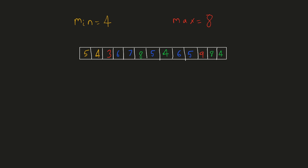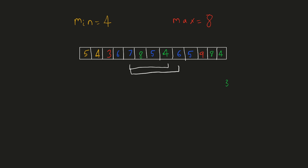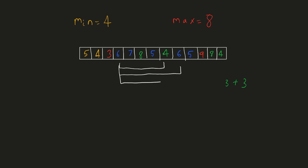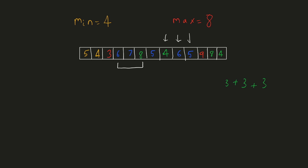Now let's count the valid subarrays. We can see that starting at the position of 8, there can be 3 valid subarrays. Similarly, starting at 7, there can be 3 valid subarrays, and starting at 6, there can also be 3 valid subarrays. We can notice that there are 3 valid starting points for our subarrays, and for these ending points there can be 3 subarrays where the starting point is one of those 3 points.